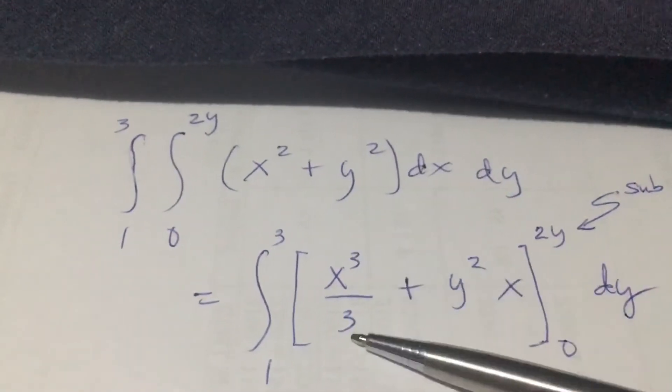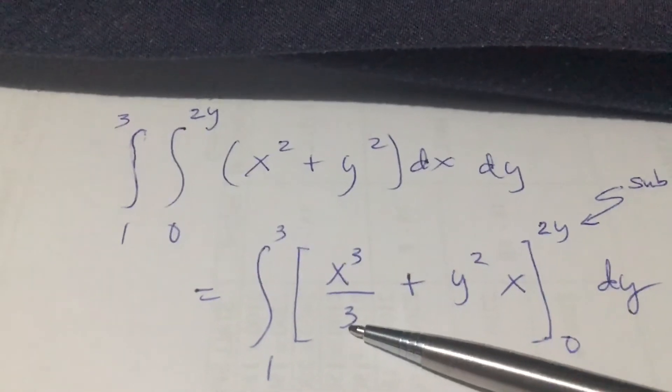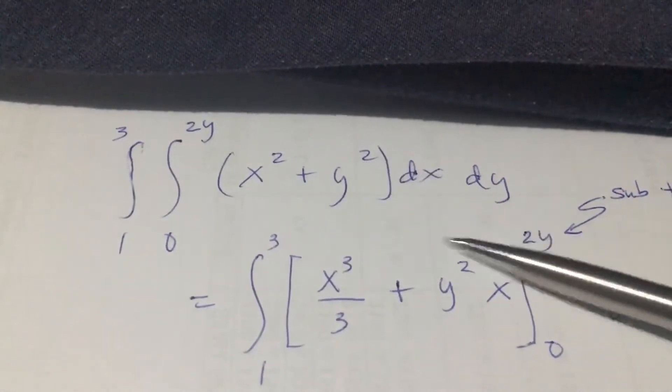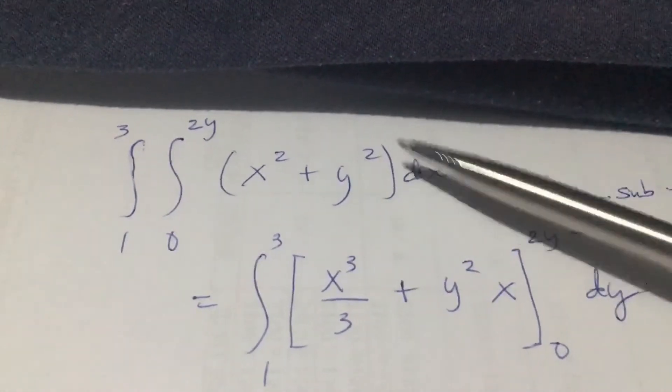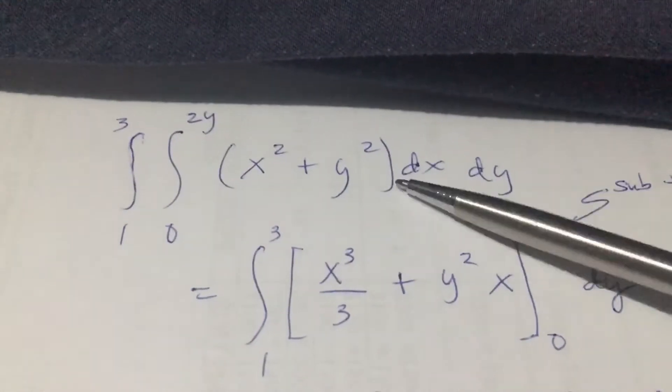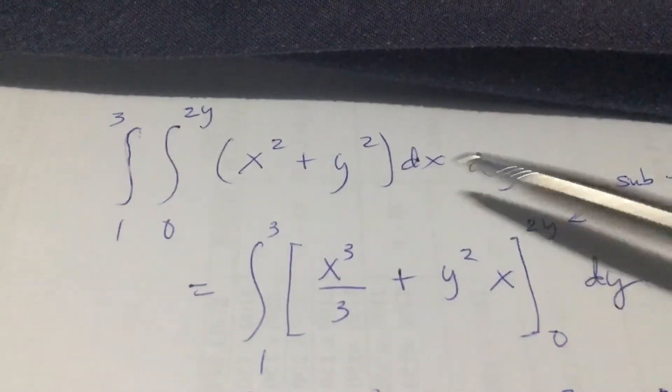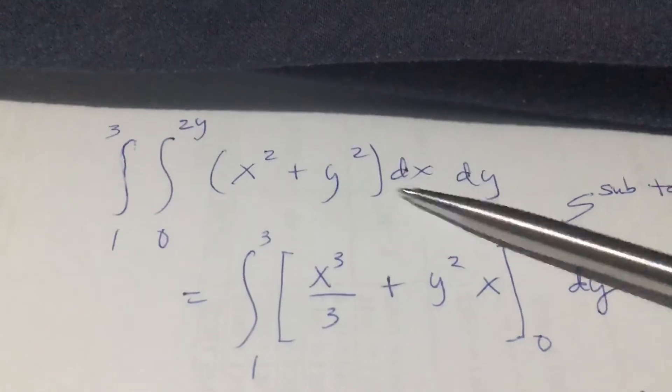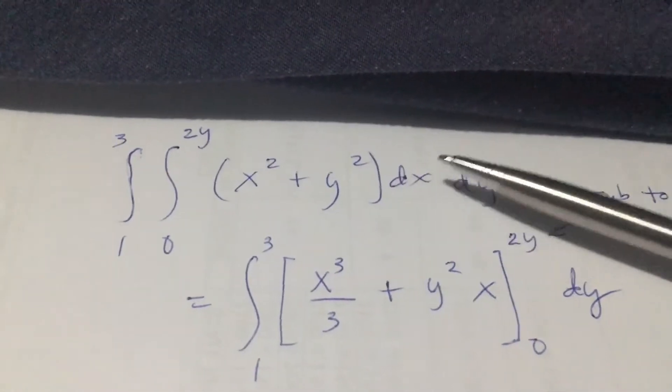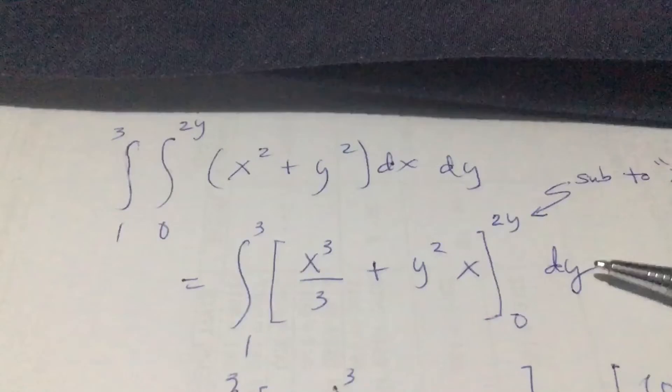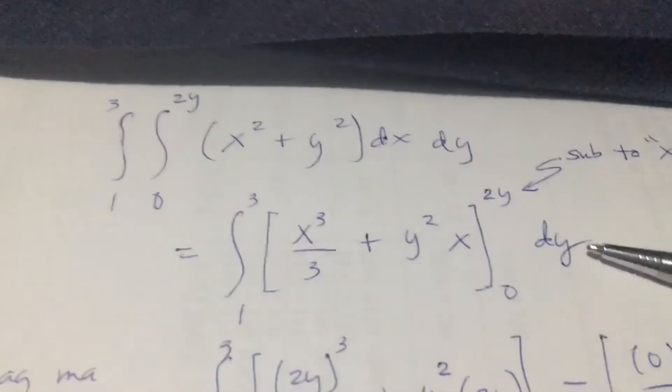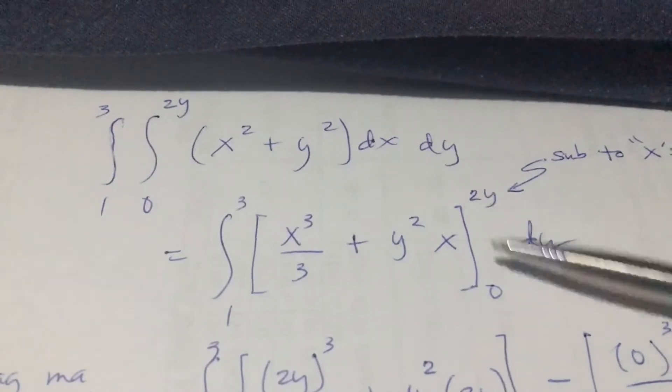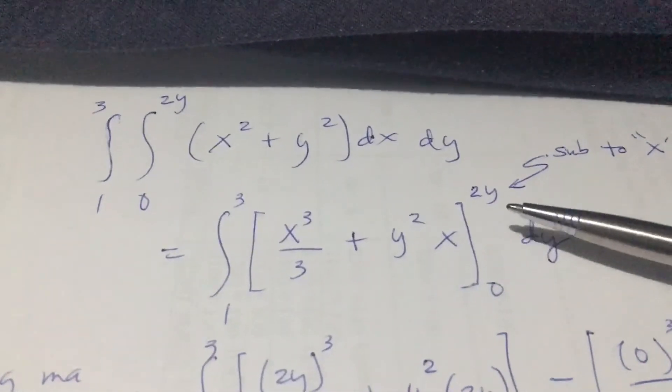And then copy the 3, bring it to the denominator, plus y squared. Bring down the y squared. We are not going to deal with the y for a moment. And then bring the x here and the dx will disappear. The letter d will disappear. And then bring down the dy and put the upper and lower limits for the x.